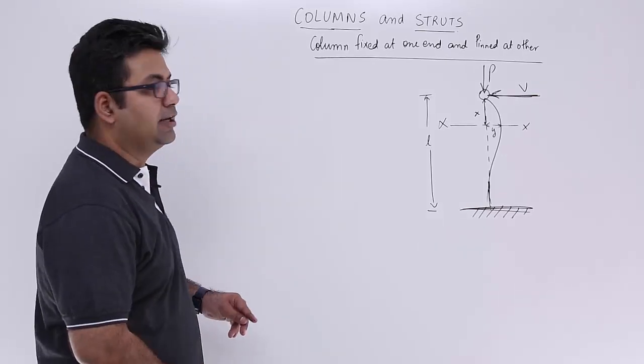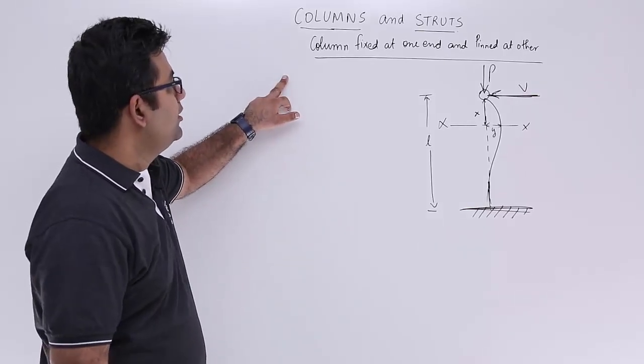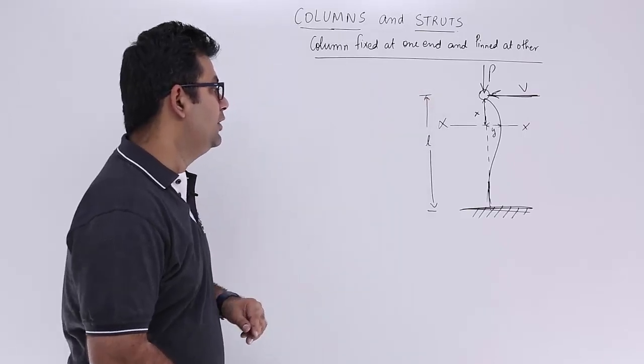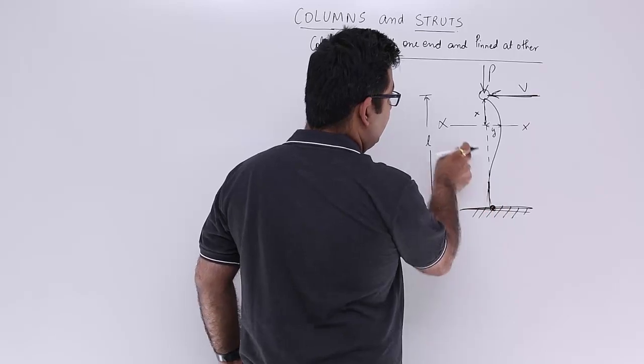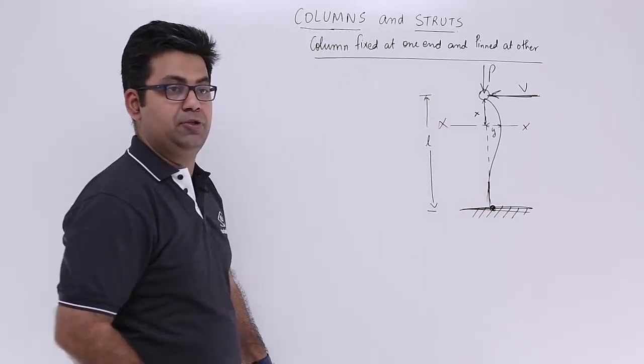Now let's look at the next condition, which is the column which is fixed at one end and pinned at another. So this is the end which is fixed and this is the end which is having a pin joint.